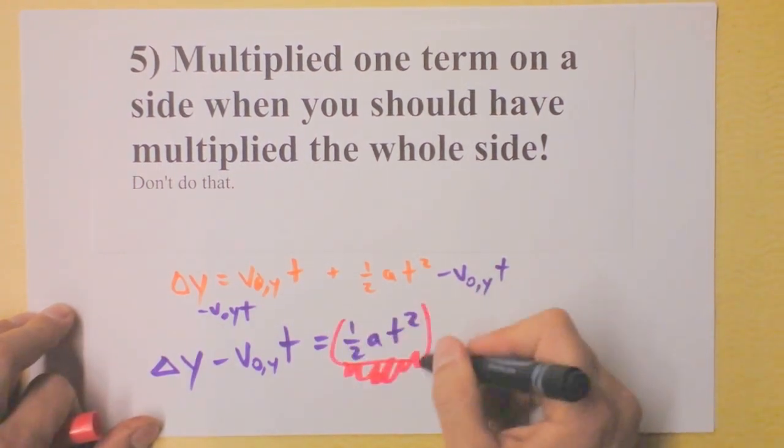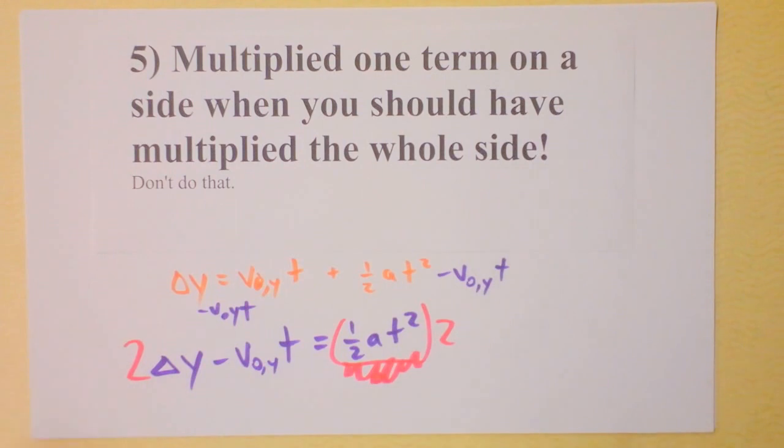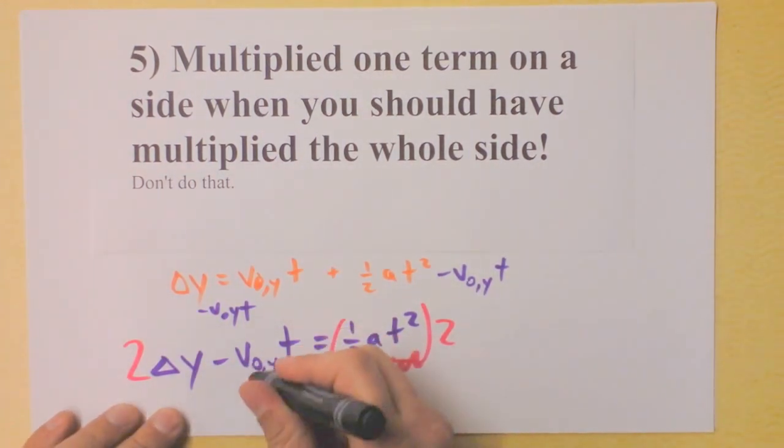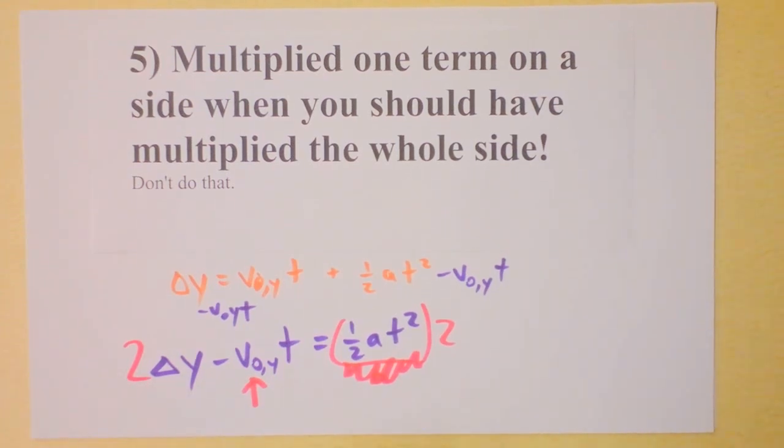I'm going to multiply this side by 2, right? And I'm going to multiply that side by 2 and say that I'm done. Oh my goodness, this is so wrong.